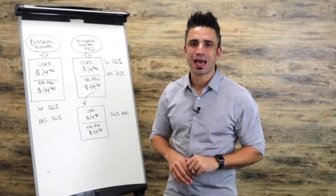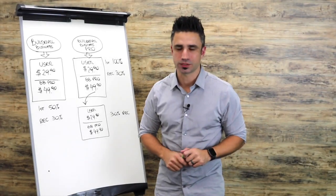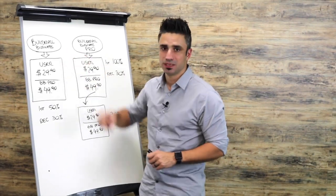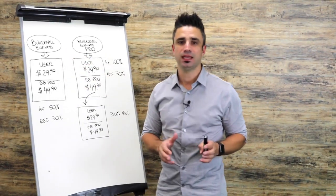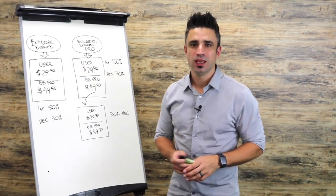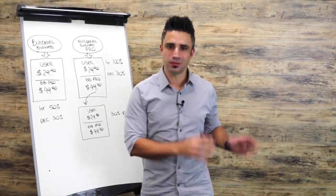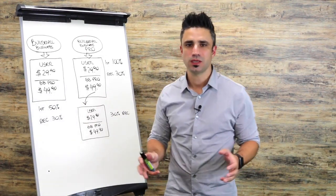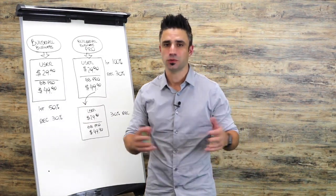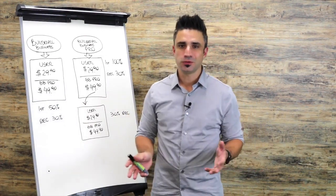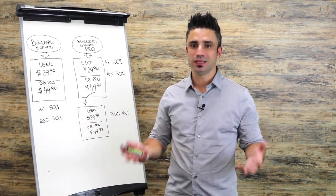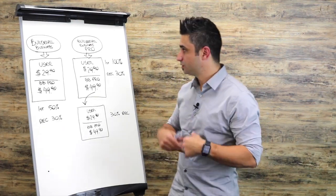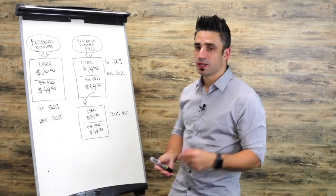In this video, I'm going to show you how the Builderall Compensation Plan works. So let's say you have the Builderall Business Plan — this is the plan that you don't need to pay to get started. You get access to a unique link, and you can begin promoting on social media: Facebook, Instagram, Twitter, YouTube. If you have an email list, you can blast it out to them and begin promoting that way.